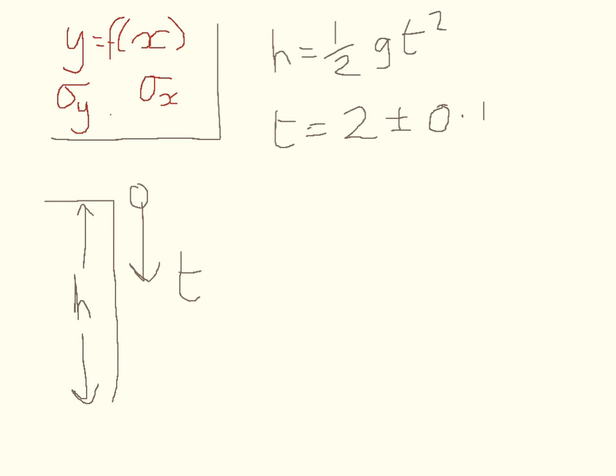So then, what is the value of h and what's the uncertainty? Well, to work out the value of h, you just substitute 2 in here. So you get half g 2 squared, which tells you that the value of h is half times g times 2 squared, which is 19.6 metres.